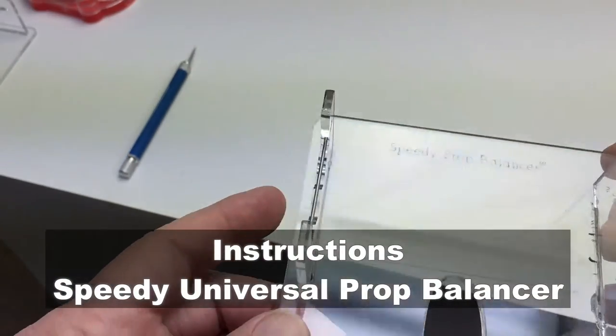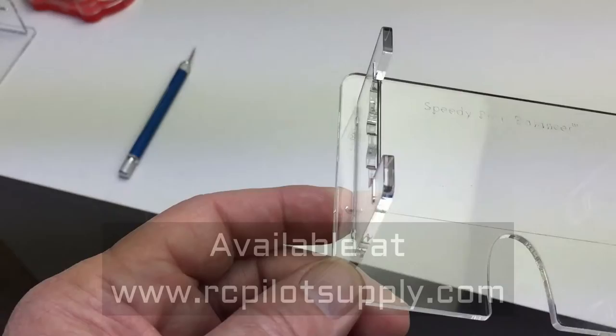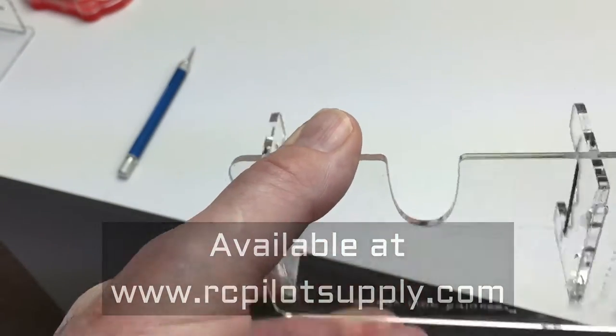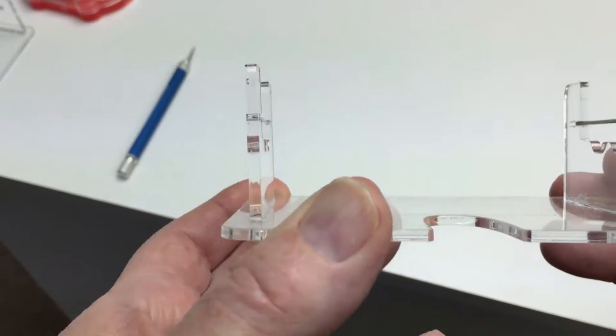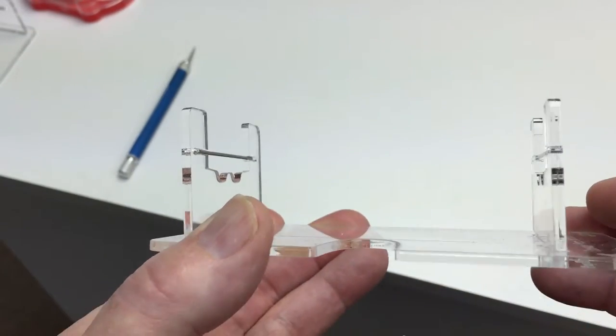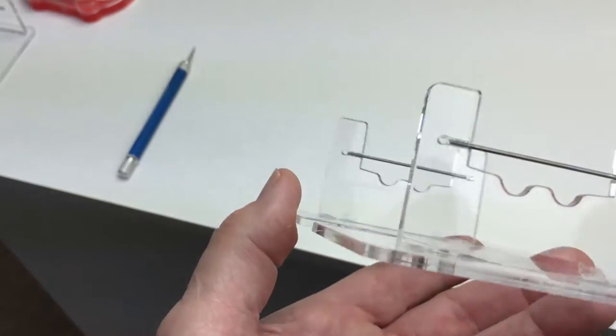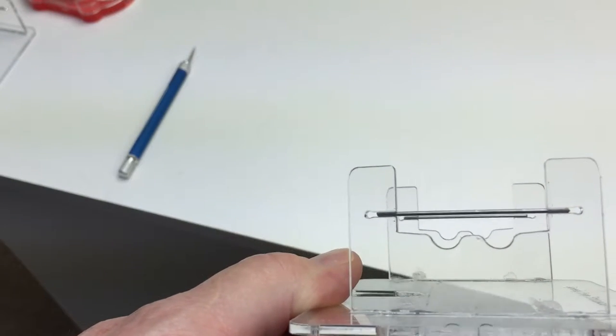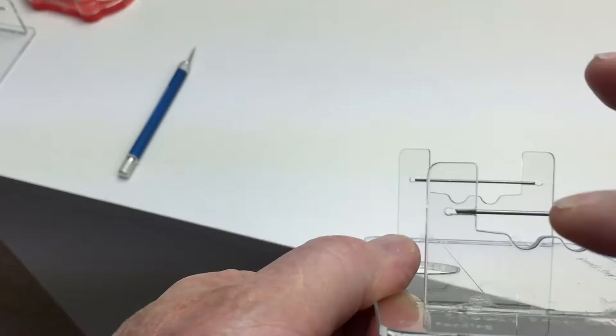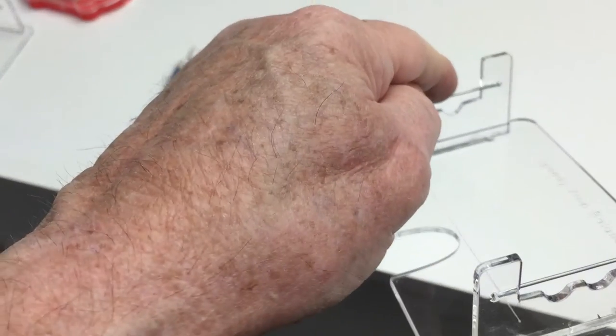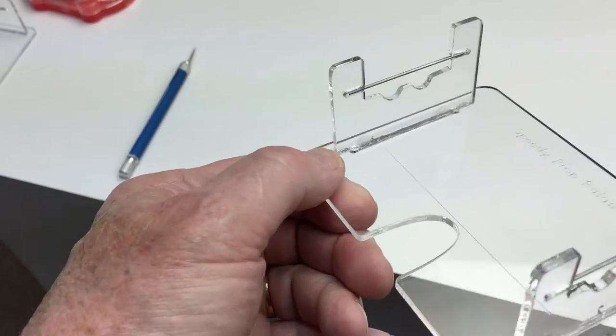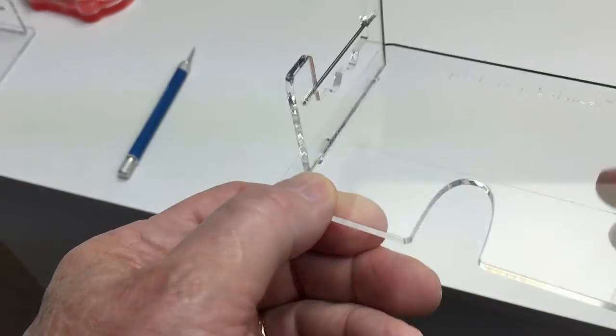This is the Speedy Universal Prop Balancer made from high impact clear plastic. The uprights are slotted into the base and then glued in so that they're exactly perpendicular to the body. There are two embedded hardened steel wires that are exactly parallel from end to end, so that the distance between here and here fits the rod and they're exactly level with each other.